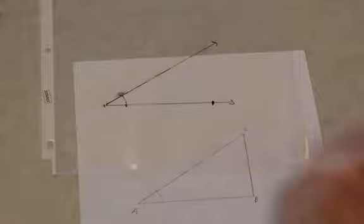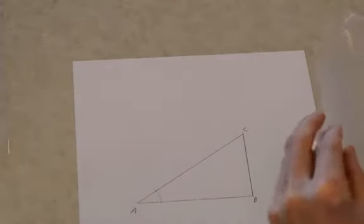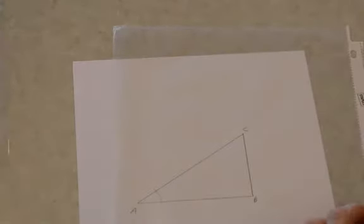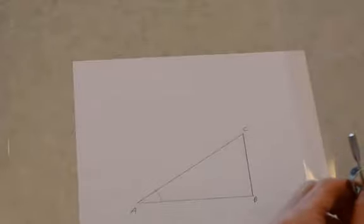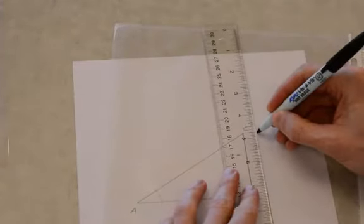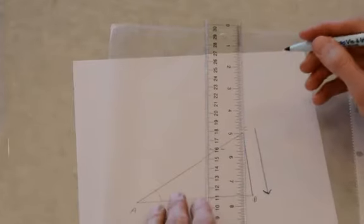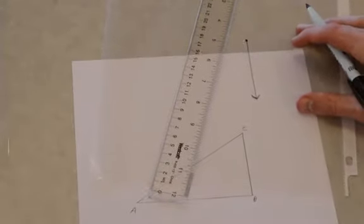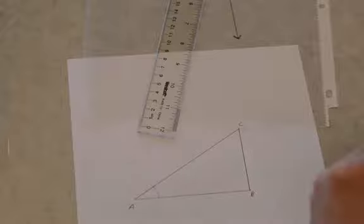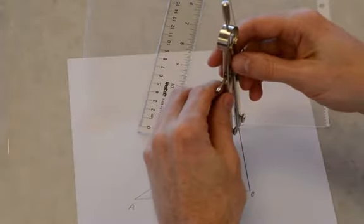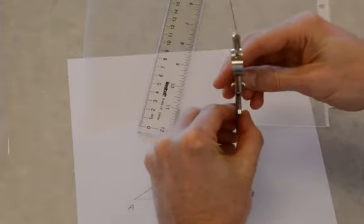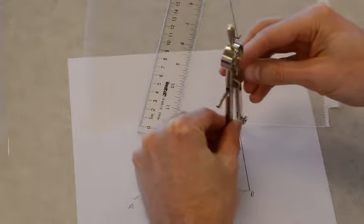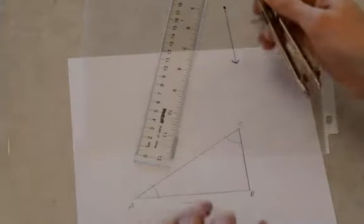Now I'm going to copy angle C on a different transparency. I'm going to measure the width of the angle.